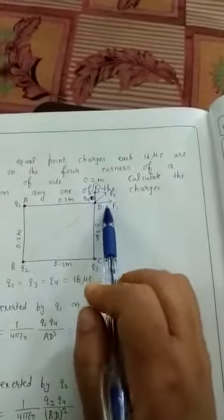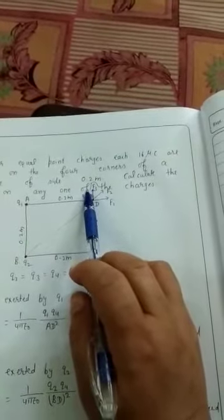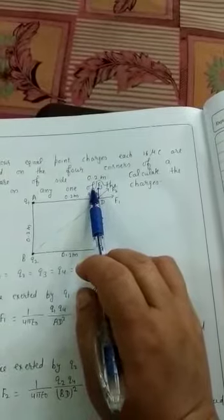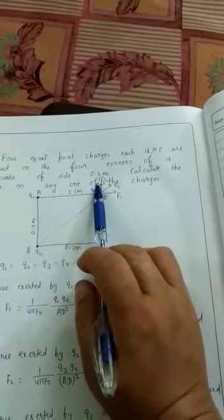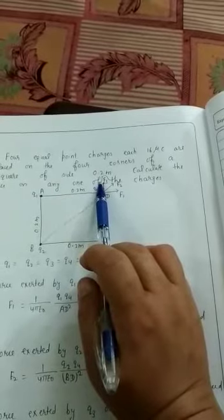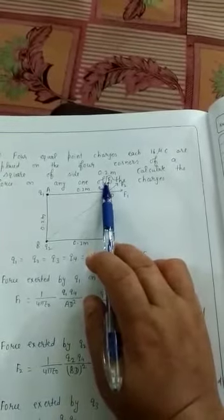F1 and F3, they are perpendicular to each other. By using parallelogram law of vector addition, R = √(a² + b² + 2ab cos θ). The resultant of F1 and F3 can be written as √(F1² + F3² + 2F1F3 cos θ).